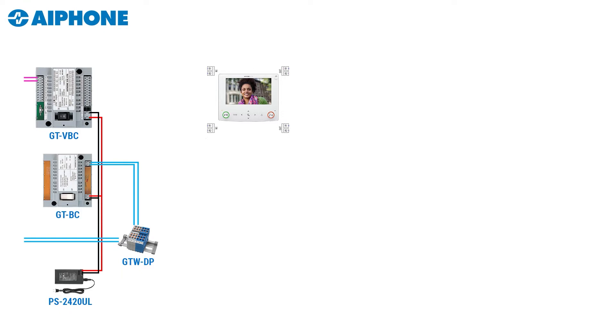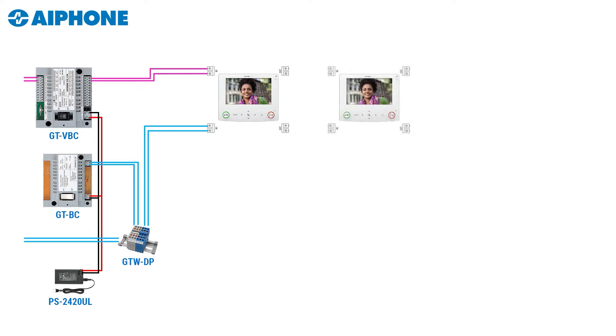Let's add the audio trunk line. We'll take R1 and R2 from the GT WDP and run it to the first apartment station R1 and R2. Then we'll add the video trunk line, taking B1 and B2 from the GT VBC and running it over to B1 and B2 of our first tenant station. Notice that B1, B2, R1, and R2 have inputs and outputs — all we need to do is start adding more tenant stations to the output, and every station we add extends our trunk line.